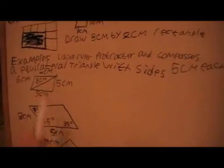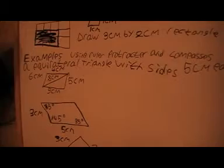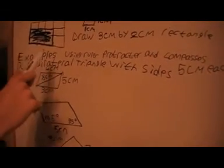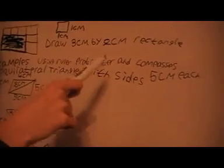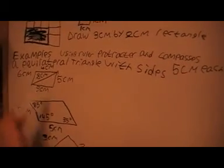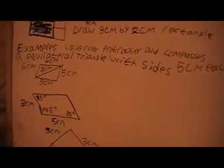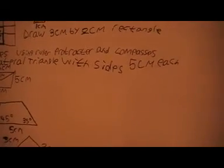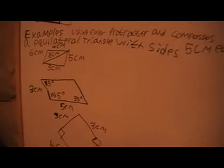Now also, we can draw 2D shapes using rulers, protractors, and compasses. I've got a few examples here. Before I start, I just want to let you know that you can't really use any of these things on the board, so they're just going to be explained and the diagrams I'm going to draw are not going to be to scale at all.